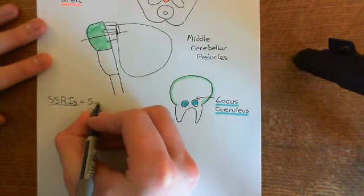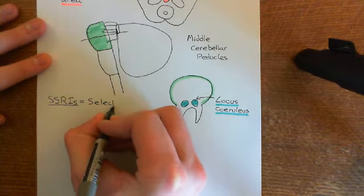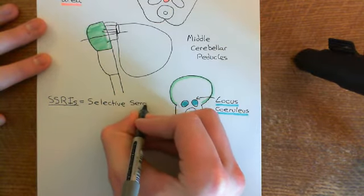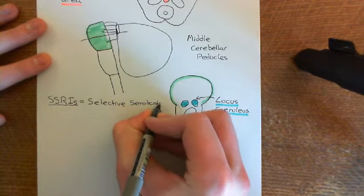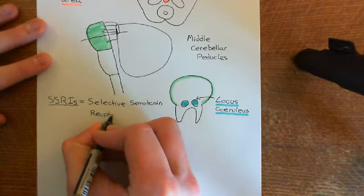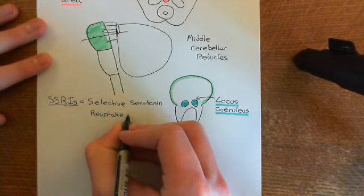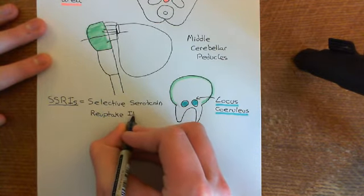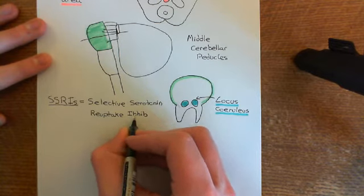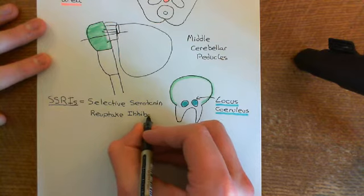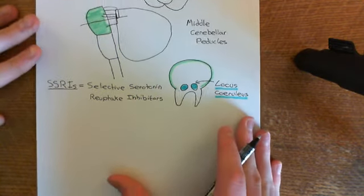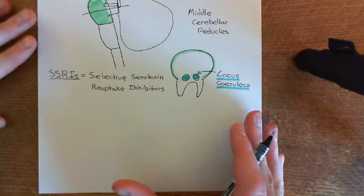It stands for Selective - that's the first S. Then the second S is for Serotonin. The R is for Reuptake, and the I is for Inhibitor. So these are the Selective Serotonin Reuptake Inhibitors, the SSRIs.